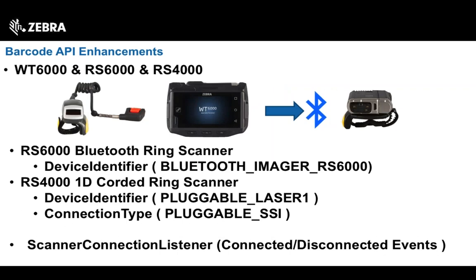We've made enhancements to the barcode API to allow for use of the RS6000 Bluetooth scanner. We already have support for the RS507 ring scanner as a legacy device, but we've added support to identify the RS6000 once it's paired and connected — adding a new device identifier: Bluetooth imager RS6000. For the RS4000 1D corded ring scanner, we've added the pluggable laser one and a new connection type of pluggable SSI. The RS6000 has connectors on the right and left side of the device that allow you to plug in multiple different accessories, including the RS4000.